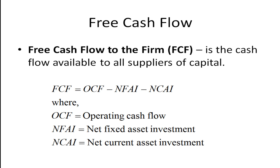When valuing a firm's common stock, we oftentimes use the dividend discount model. One problem with this is many companies don't pay a dividend. A lot of tech startup companies tend to reinvest in the business rather than paying out a dividend. Warren Buffett's company, Berkshire Hathaway, has never paid a dividend as long as he's been running the company because he chooses to allocate the capital himself rather than giving it back to his shareholders.